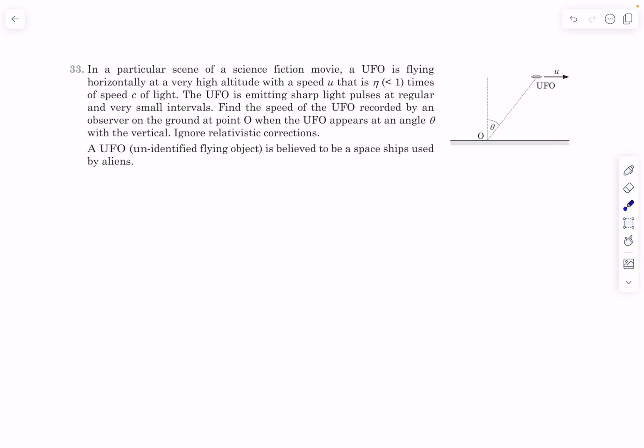In this problem we have a UFO that is flying horizontally at a very high altitude with a speed u that is η times c, which is less than 1 times the speed of light.